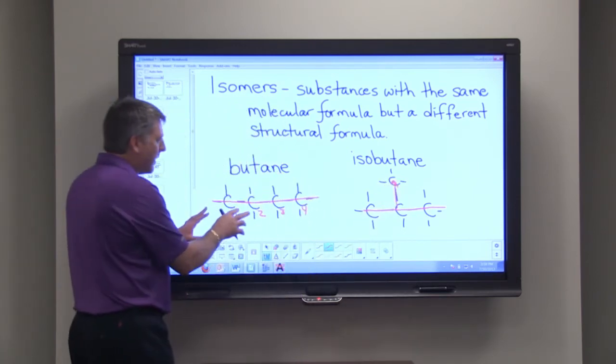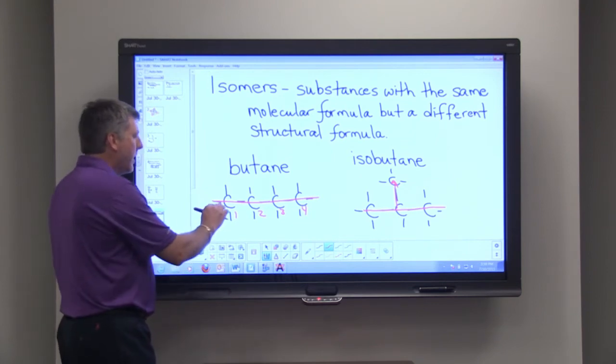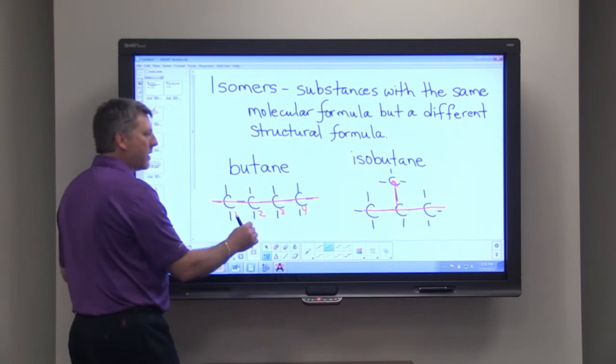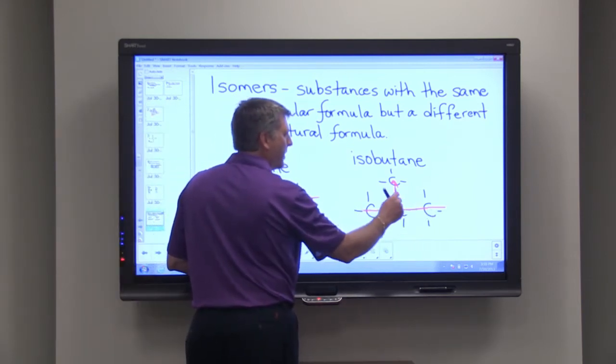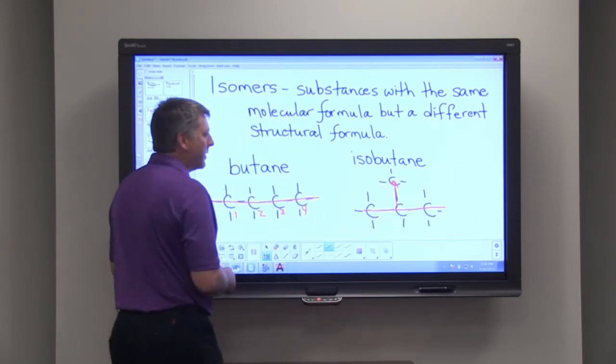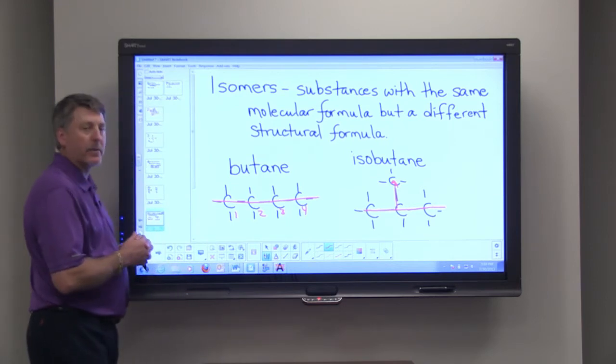And so that sort of gives you an idea as to what isomers are all about. In butane, the carbons are all in one chain, but in isobutane, we have three carbons in a chain and the fourth carbon is attached to the second carbon. So that's how isomers work.